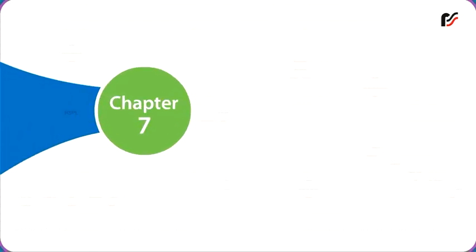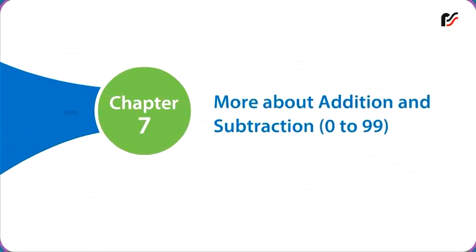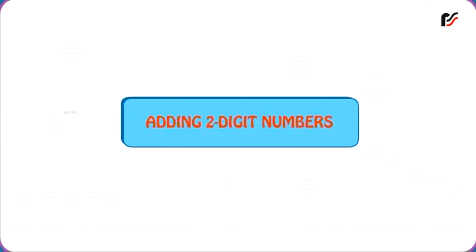Chapter 7. More about addition and subtraction. 0 to 99. Adding two-digit numbers.